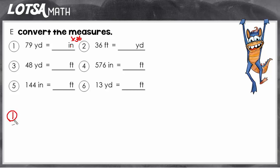So once we have that, we can just do the math. 79 times 36. So the answer is 2,844 inches in one yard.